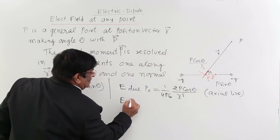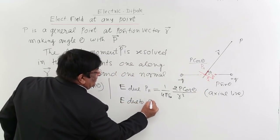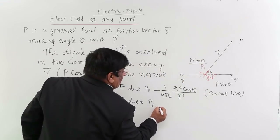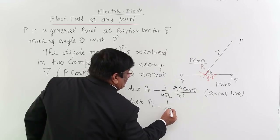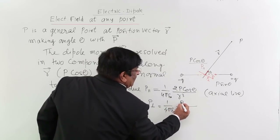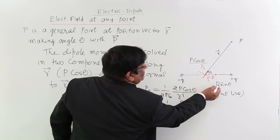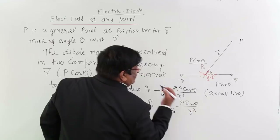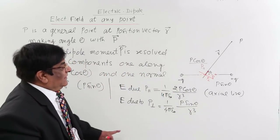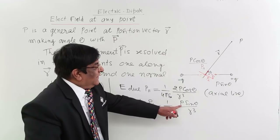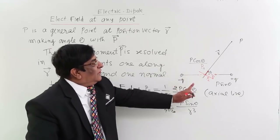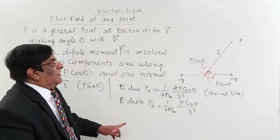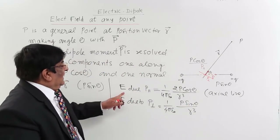Now, E due to p perpendicular: for this component, point P lies on the equatorial line. So we use the equatorial formula: E due to p perpendicular = (1/4πε₀)(p sinθ / r³), since the effective dipole moment here is p sin theta.